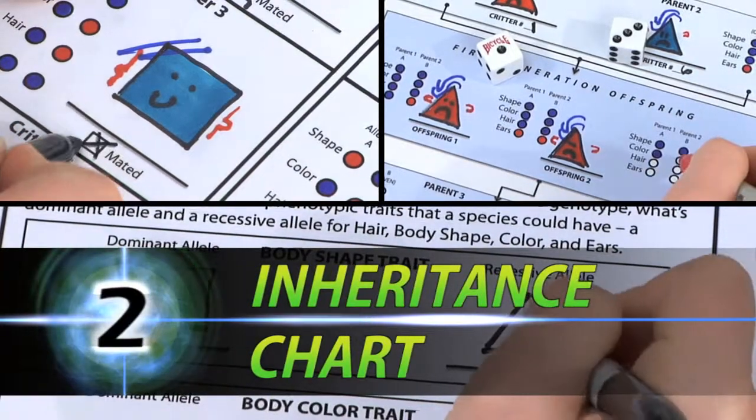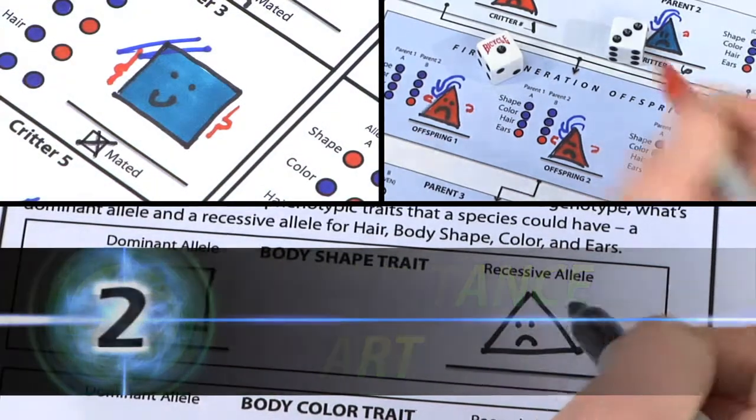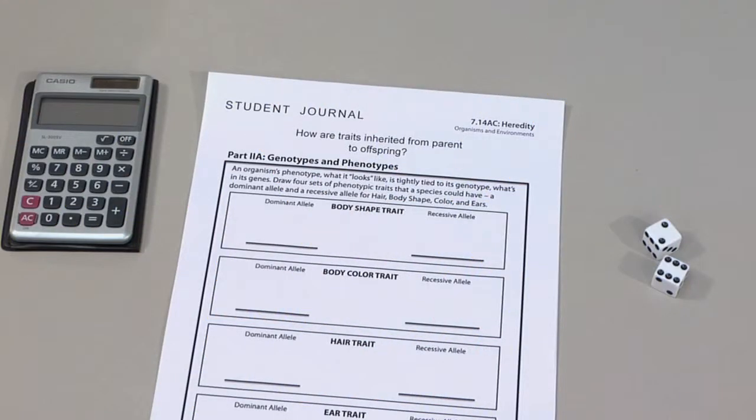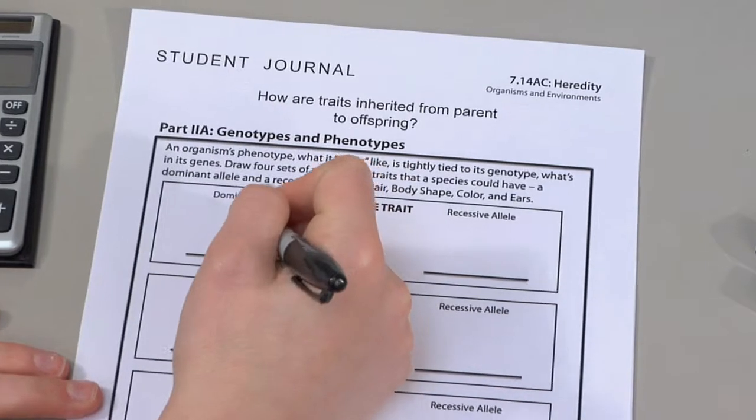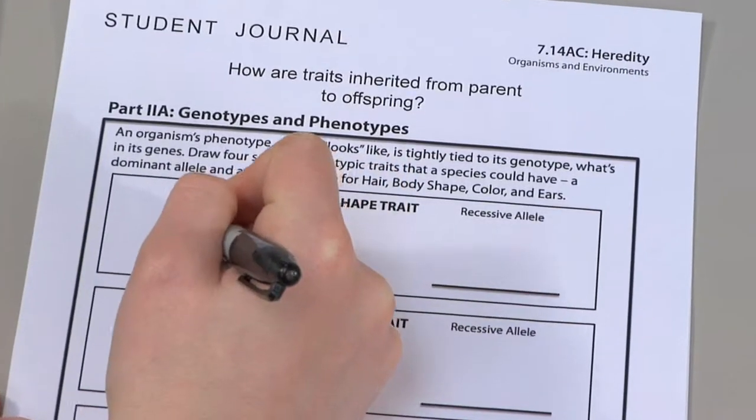Tracing inheritance from phenotypic traits. To understand the relationship between genotype and phenotype, draw four sets of dominant and recessive alleles for body shape, body color, hair, and ears.